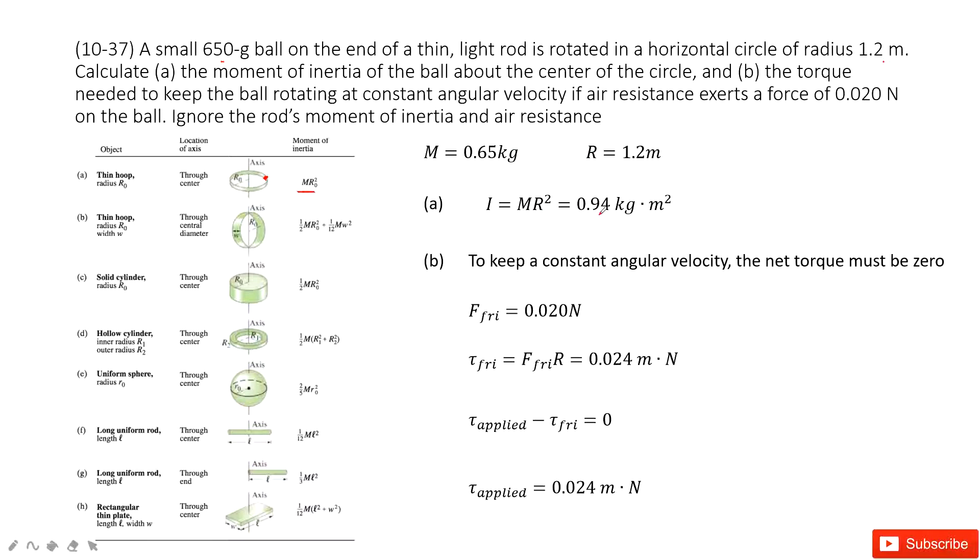Now the next one is to keep this ball rotating at a constant angular velocity. So what does that mean? Constant angular velocity, alpha equals zero. Agree? Angular acceleration is zero.